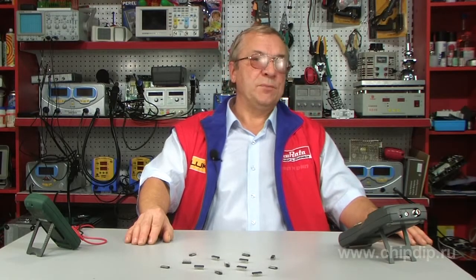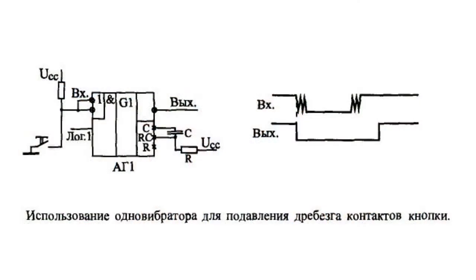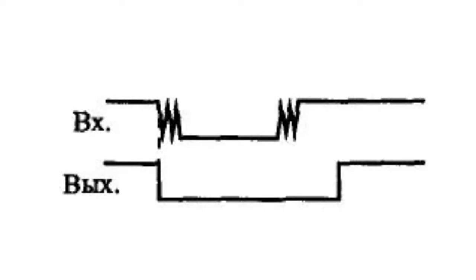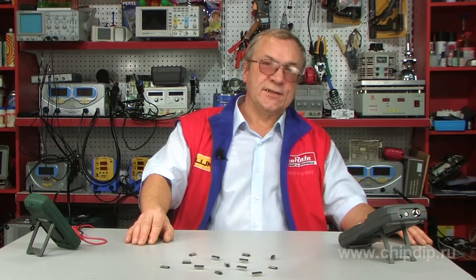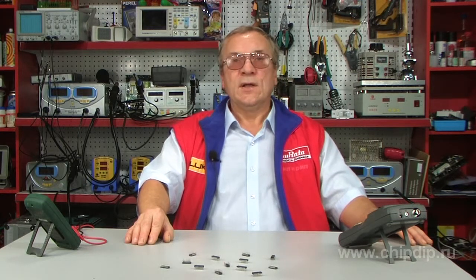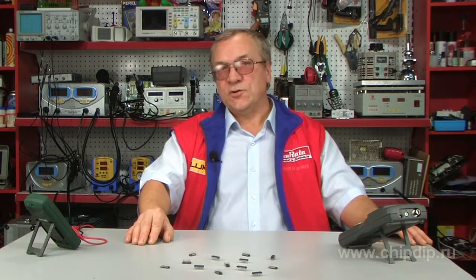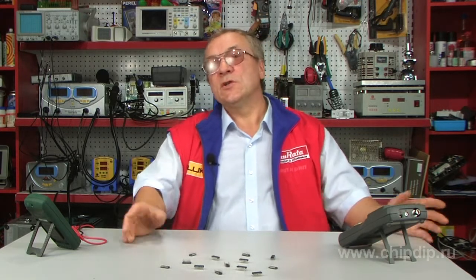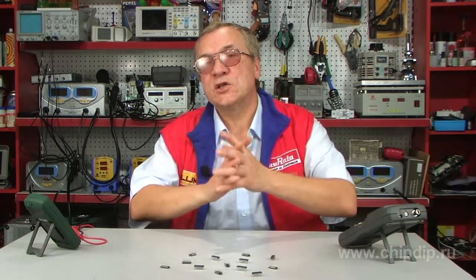Another important application of single vibrators is the suppression of contact button jingling (debouncing). Single vibrators with an increased exposure time of fractions of a second are reliable in suppressing parasitic impulses appearing due to contact bouncing, and produce clean impulses for every pressing of the button.